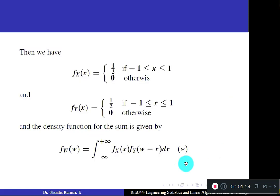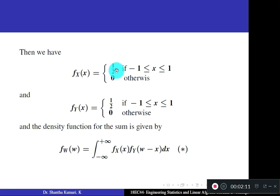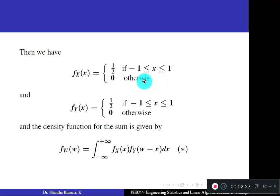Now, what is the PDF of a uniform random variable? Recall from your first module: if a uniform random variable is defined in the interval a to b, then the PDF is 1/(b−a). Here, a is −1 and b is 1, so 1/(b−a) gives 1/(1−(−1)) = 1/2. In other regions, it is 0. This is the PDF for the first random variable x.